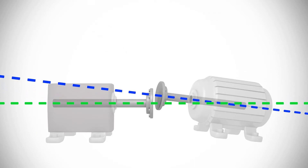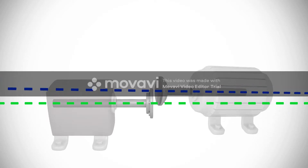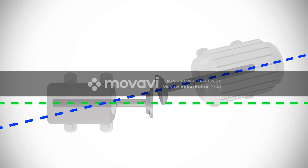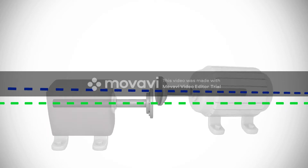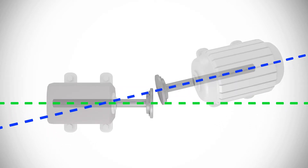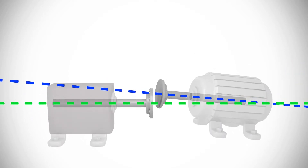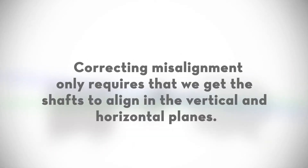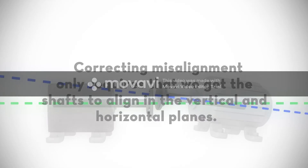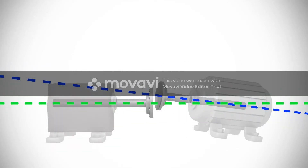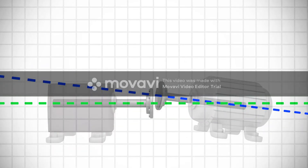What we usually see in the field is a combination of both offset and angular misalignment occurring in three dimensions, as you can see here as we rotate between the vertical plane and the horizontal plane. While it is much easier to understand misalignment if you can visualize it in three-dimensional space, correcting misalignment only requires that we get the shafts to align in the vertical plane and in the horizontal plane. Fortunately, we are able to adjust the relative position of the two shafts in these two dimensions.